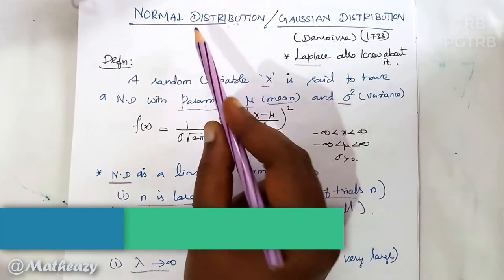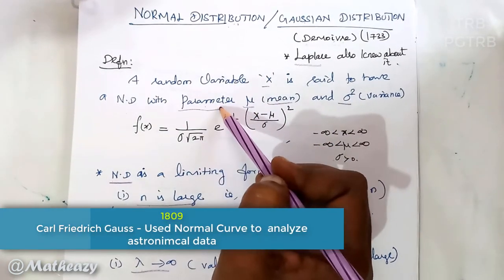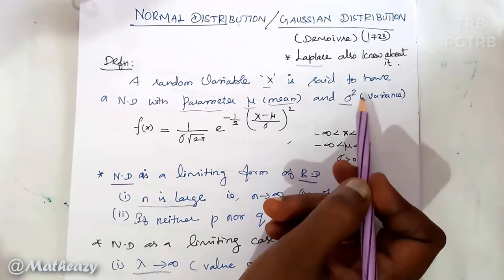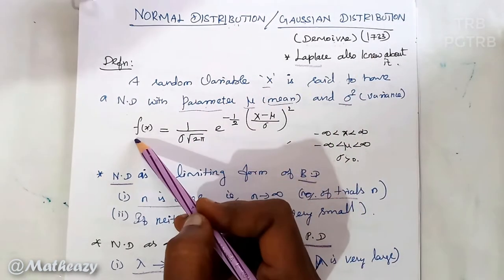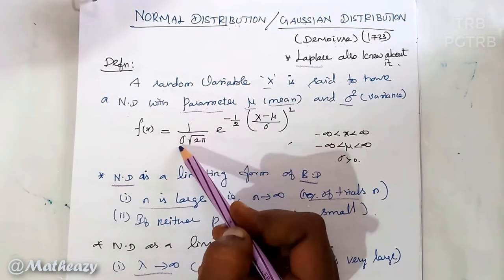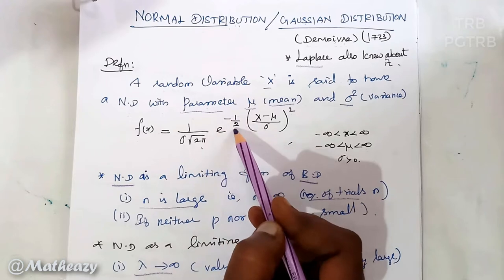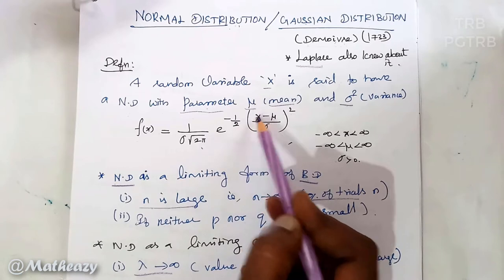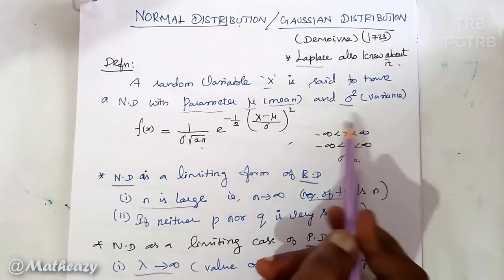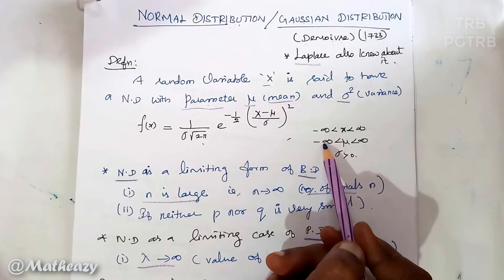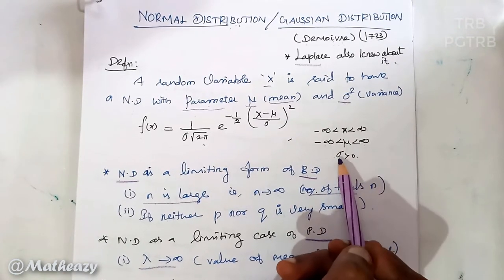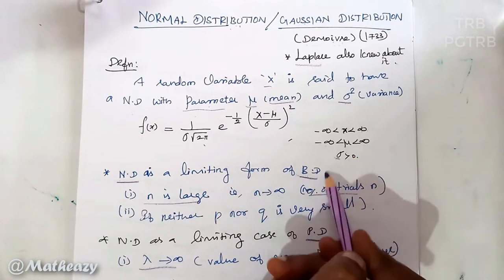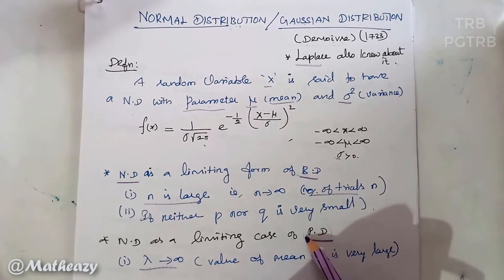A normal distribution has two parameters: mean and variance. The mean is denoted by mu and the variance is denoted by sigma squared. The probability density function is defined as f(x) = 1/(σ√2π) × e^(−1/2 × ((x−μ)/σ)²), where x lies between minus infinity to plus infinity, mu lies between minus infinity to plus infinity, and sigma (standard deviation) is greater than 0.